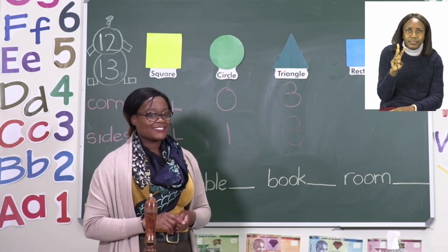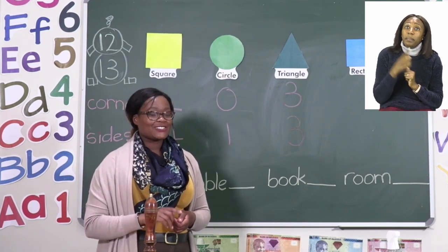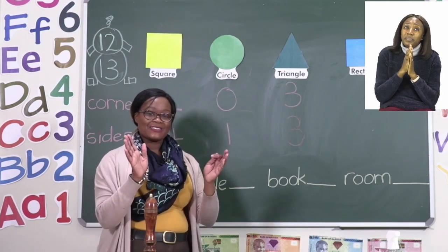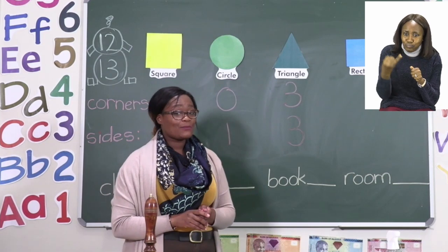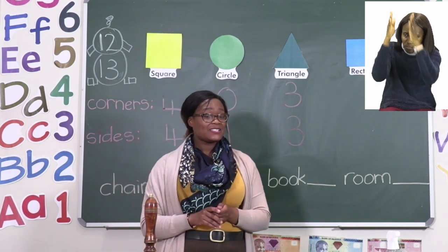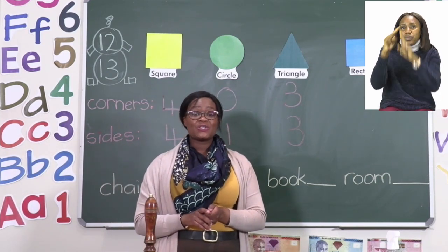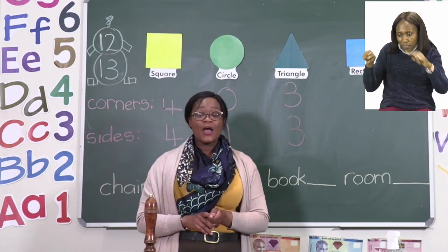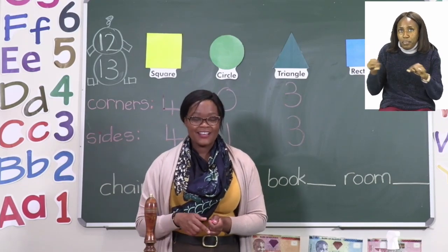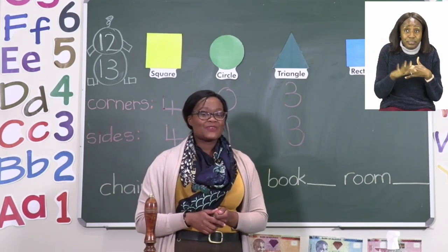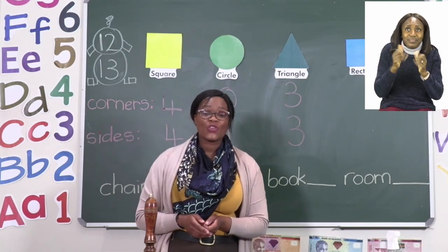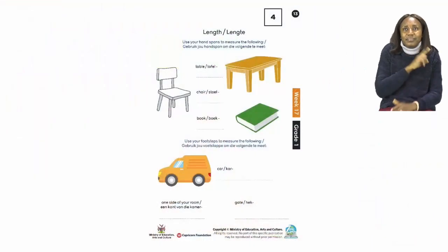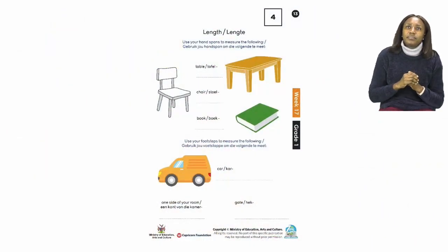By the way, don't forget to actually draw it in the box. There is a blank box waiting for you in your exercise so you can draw the shape again. When you're done with that one, I want you to move on to the next page — page 13. On page 13 we're going to be doing length.